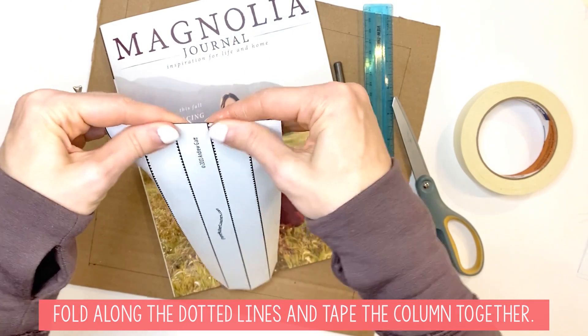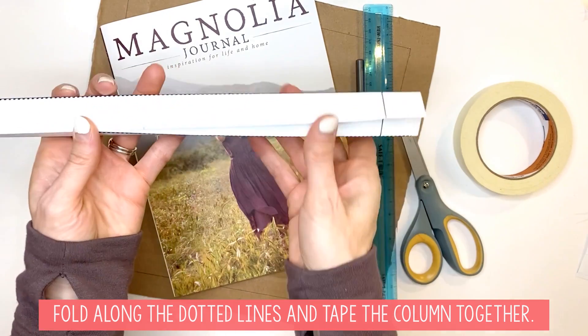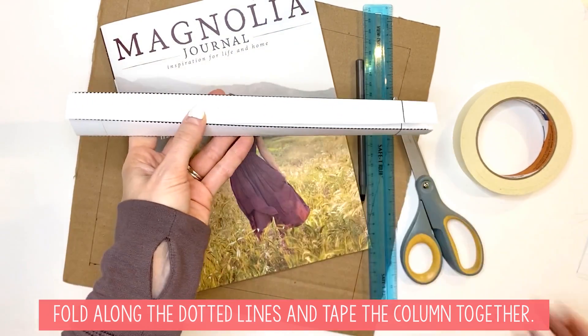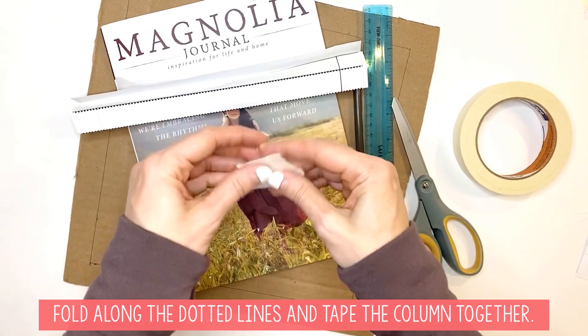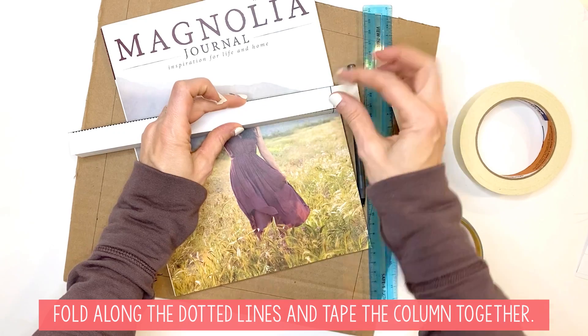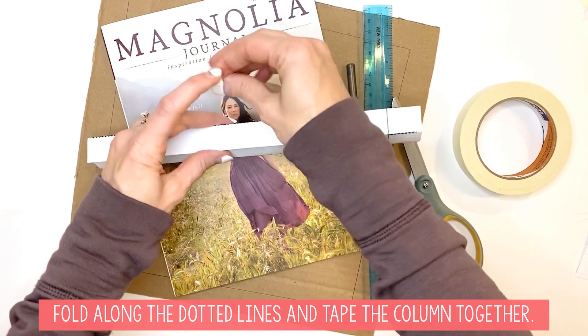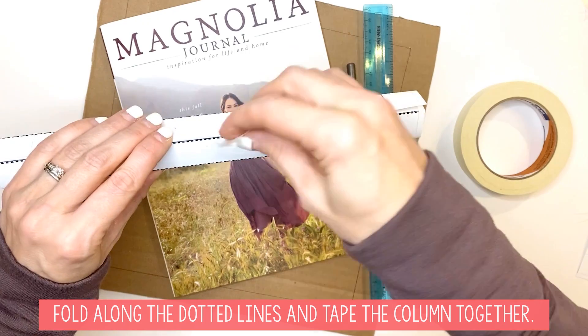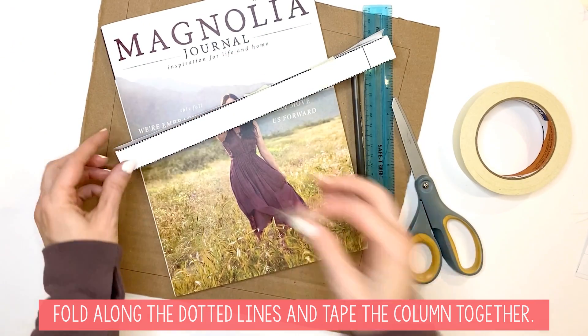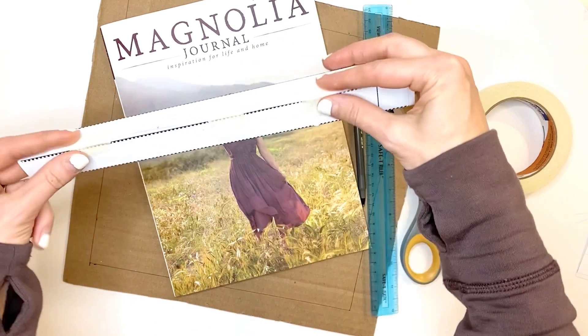...you have your column. Then you're going to take some pieces of tape—I would say probably about three—and you are going to tape this column together so that it stays put, just like this. About three pieces of tape.